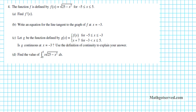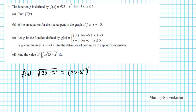Let's take a look at 4a. For 4a we are asked to find f prime of x where f of x is the square root of 25 minus x squared. This is a composite function — a composition of a quadratic function and a radical function — so we have to use the chain rule to find the derivative. This function can be written as 25 minus x squared raised to the one half.